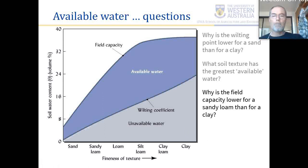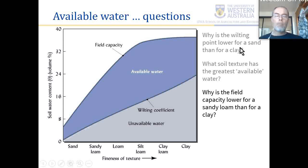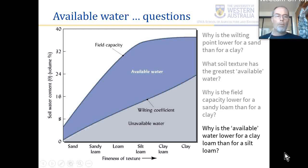Why is field capacity lower for a sandy loam than for a clay? A clay has a certain proportion of its pore sizes between 15 microns and 0.1 microns; a sandy loam has a little less, though not as much less as you might think. And why is available water lower for a clay loam than for a silt loam? This relates to what we discussed about soil texture. Understanding these questions about available water as a function of texture is very important.